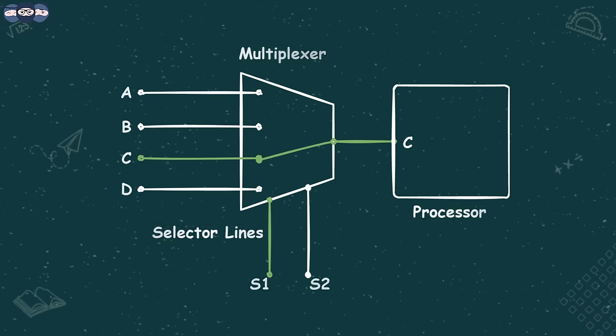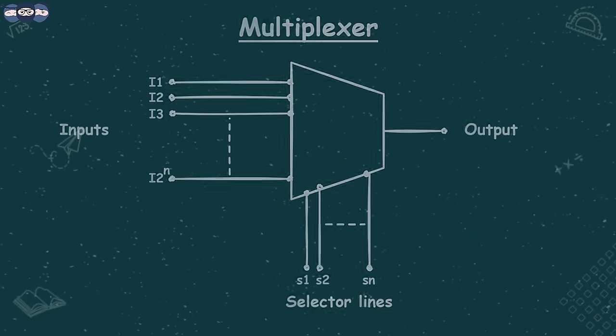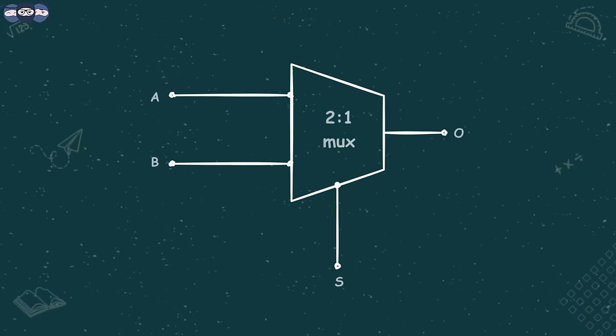MUX can be used to transmit analog as well as digital data. But today, we will understand MUX with regards to digital data. A MUX with 2 raised to n inputs has n selector lines. A MUX is identified as n is to 1 MUX, where n indicates the number of input lines. Let us understand the basics with the 2 is to 1 MUX. As the input lines are 2, using the 2 raised to n formula, we should have one selector line for this MUX.